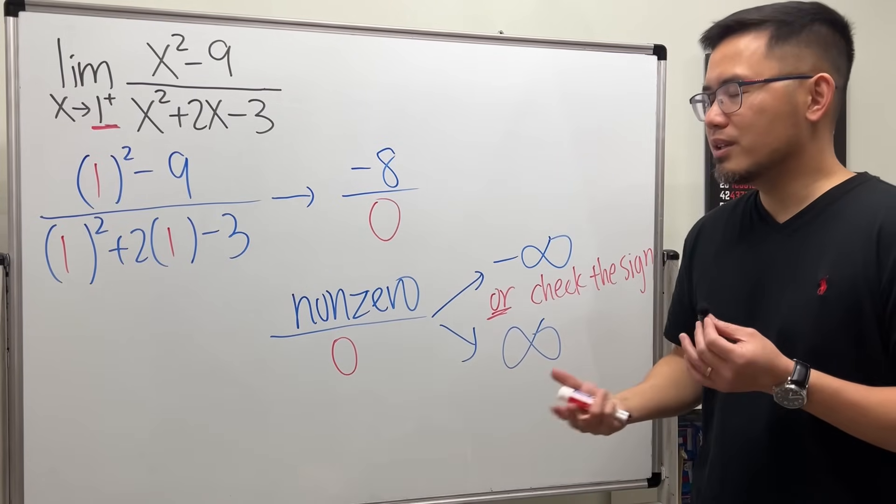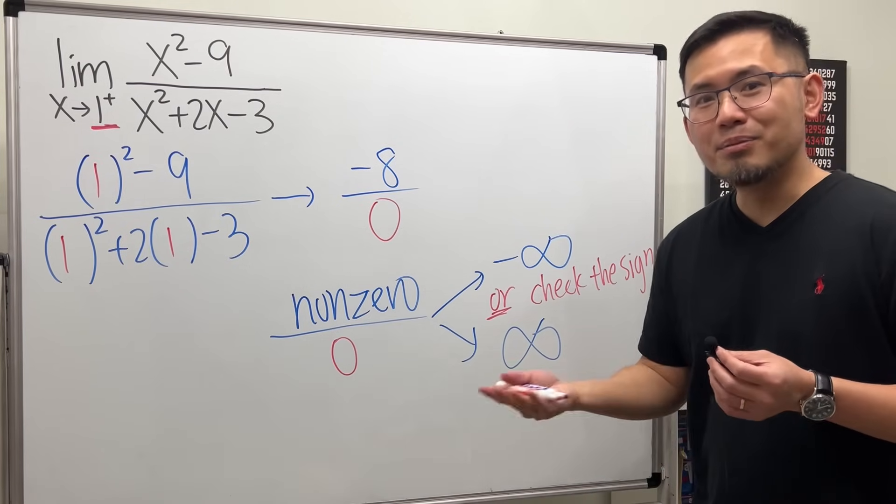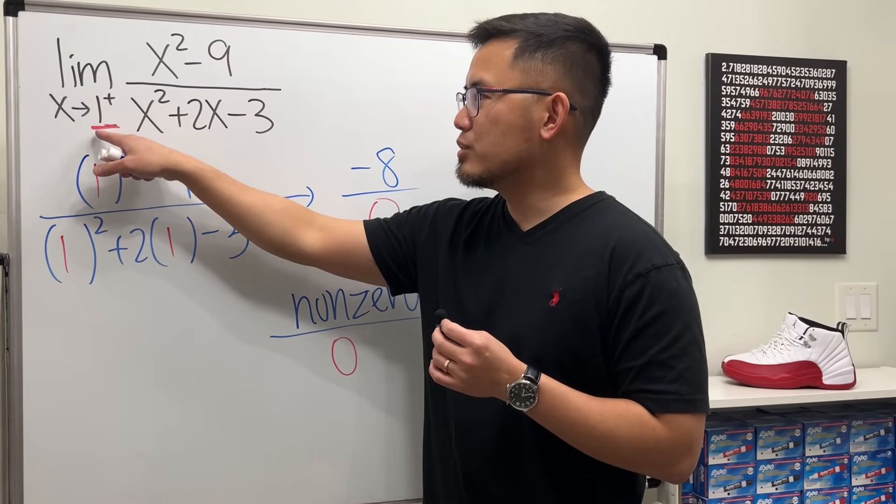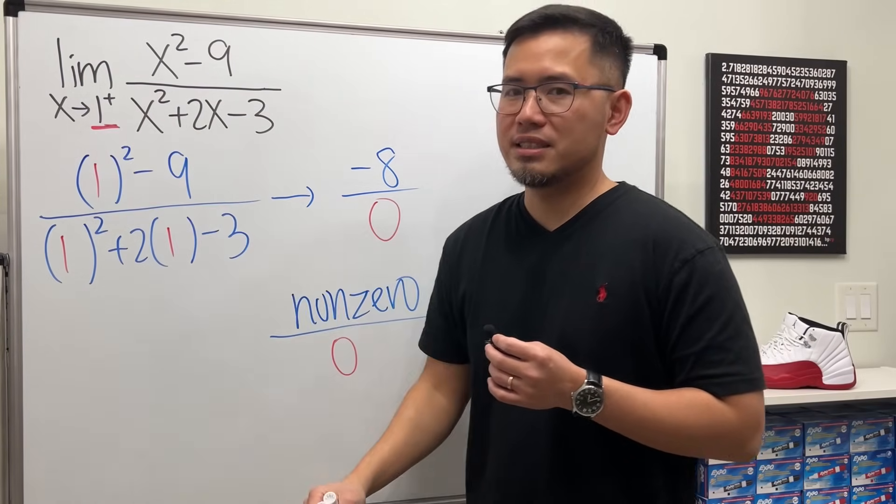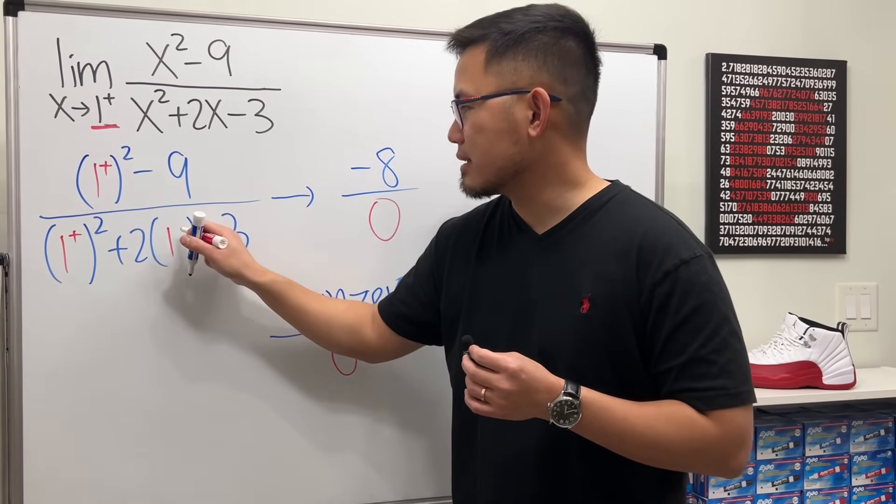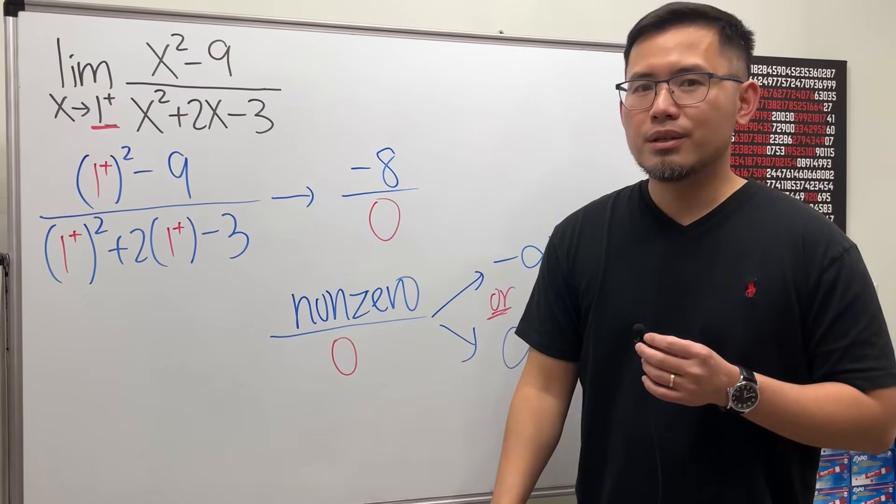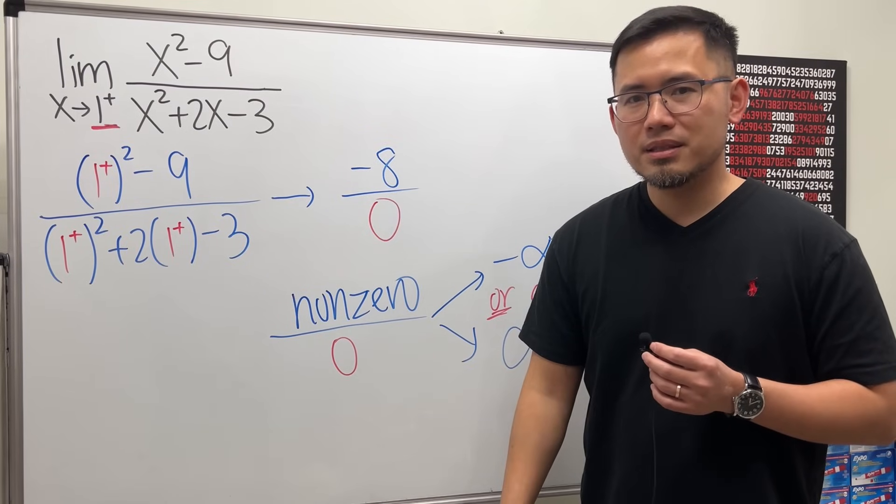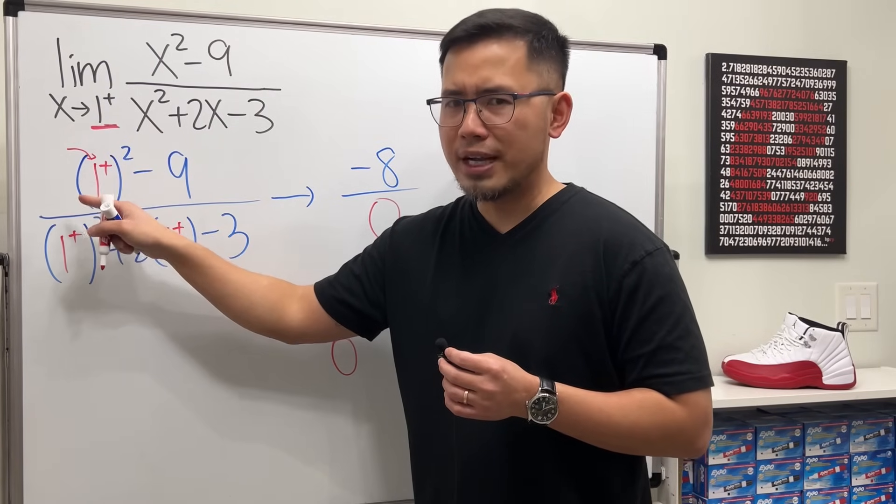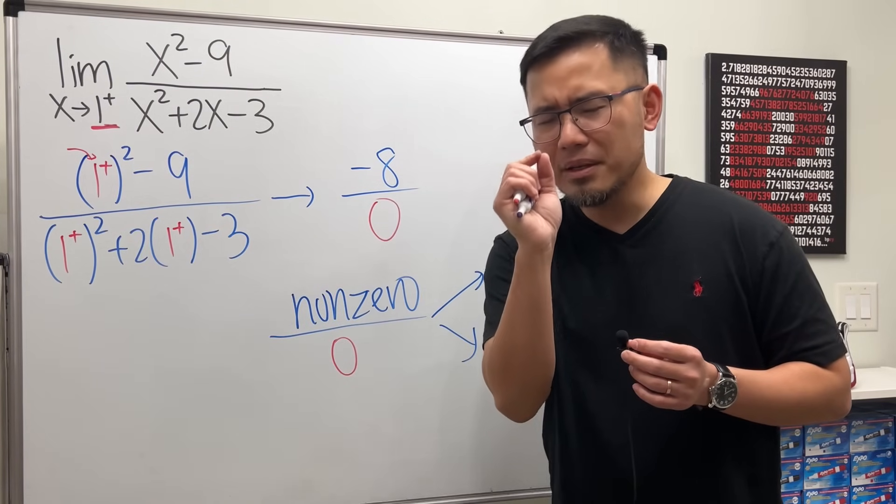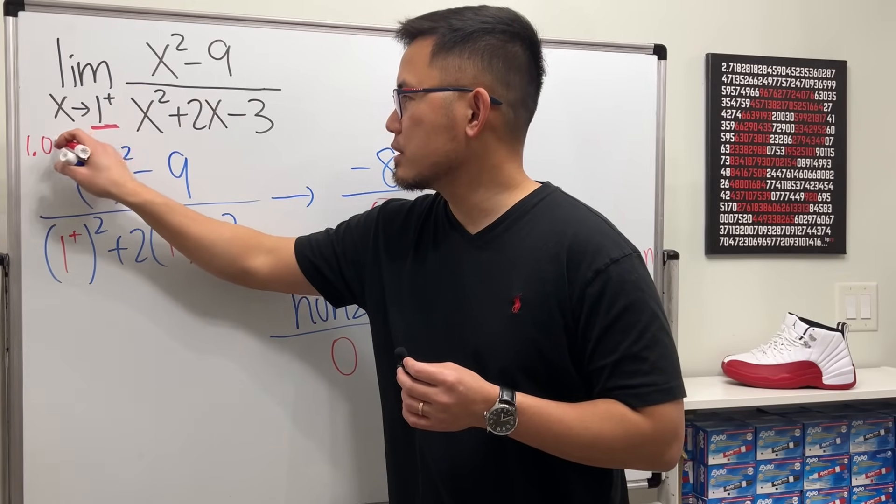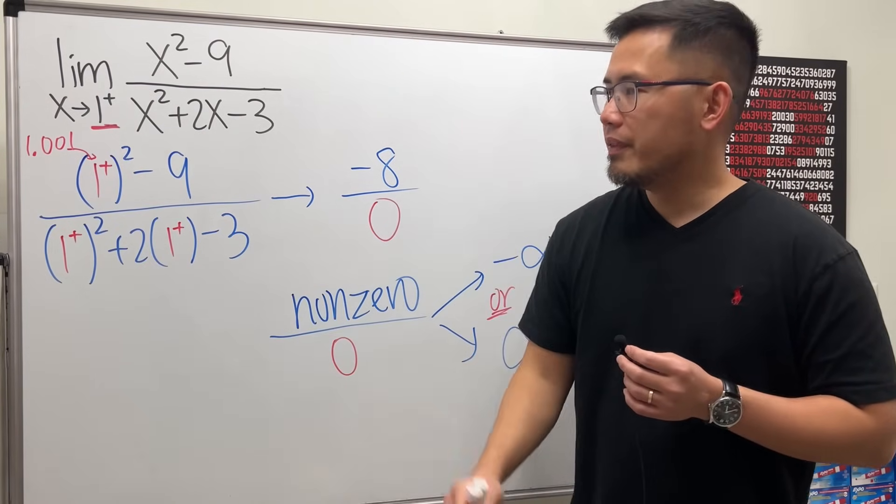Is it positive 0, negative 0? That doesn't make sense, right? And the reason is because we have to come back here and pay attention to this is 1 plus. So here it's 1 plus, likewise here it's 1 plus. What exactly is 1 plus? Just think about this as a number that's approaching 1 from the right, so just a number bigger than 1, just a tiny bit. Let's think about 1.001. Now let's work this out.